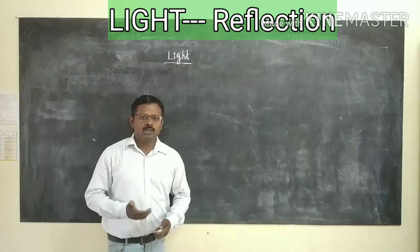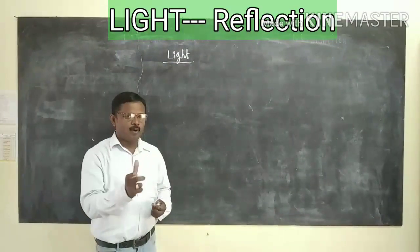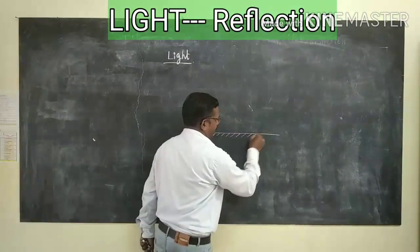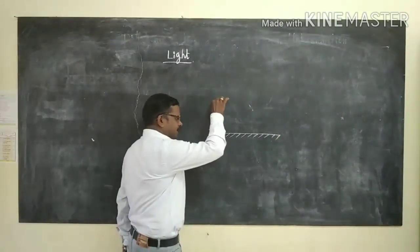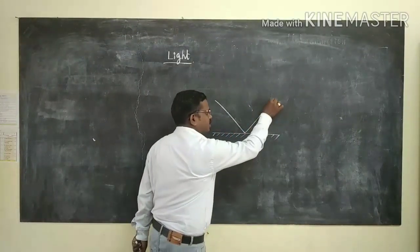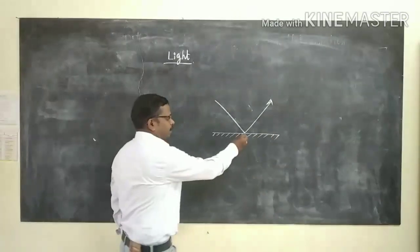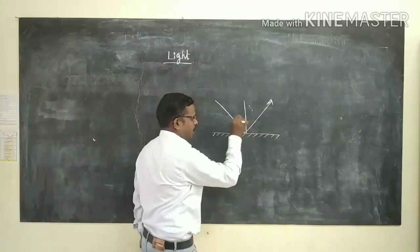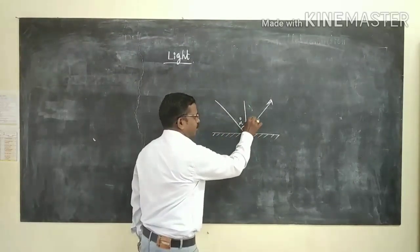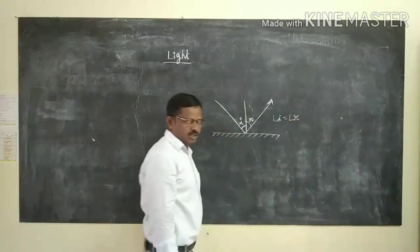In the previous class we studied about properties of light and also the law of reflection. Just to recap: this is a plane surface. When light rays strike on the plane surface, this ray is called the incident ray. It reflects back to the same medium and is called the reflected ray. If you draw a line at the point of incidence, this is the normal line. It makes an angle to the normal — this is the angle of incidence, this is the angle of reflection. According to the first law, the angle of incidence is always equal to the angle of reflection.